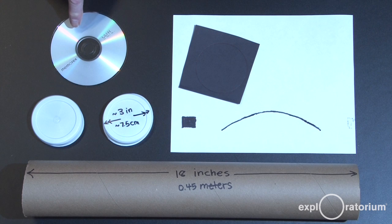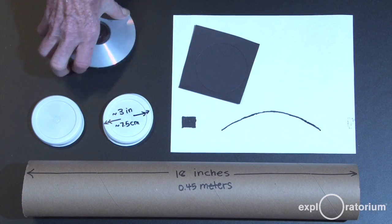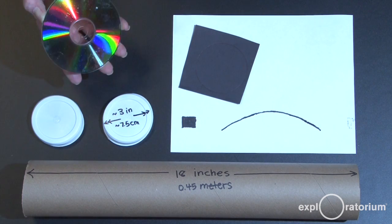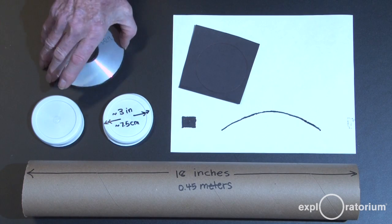You'll need a compact disc. The ones we've found to work best are the recordable kind that are blank. Any CD will work, but these work the best. Sometimes they have a bluish coating on them. You want the ones that look silvery bright.